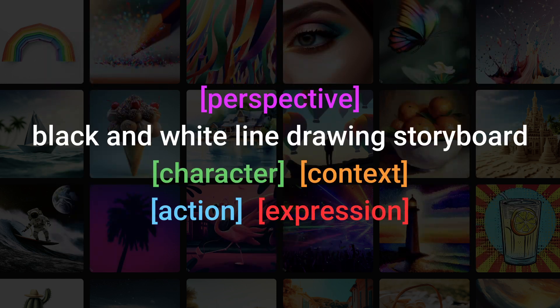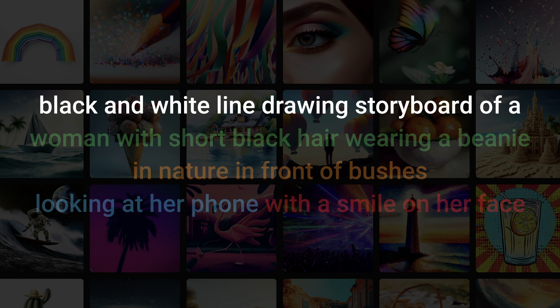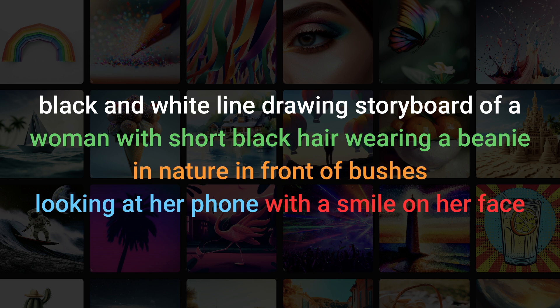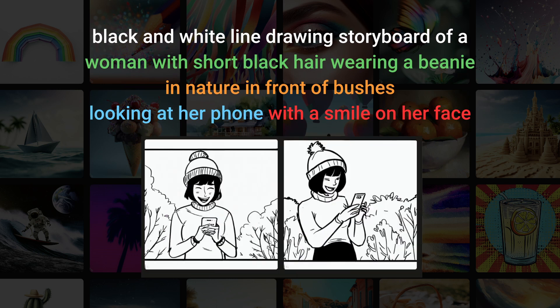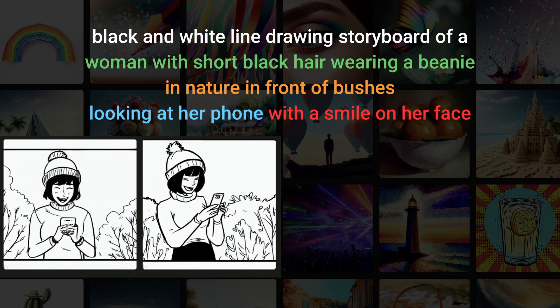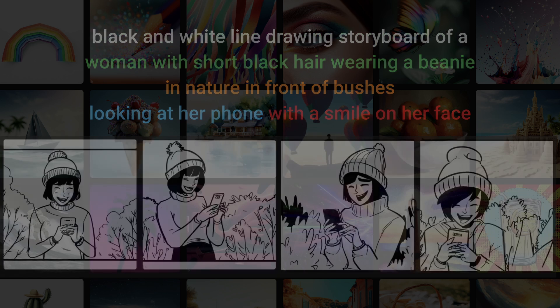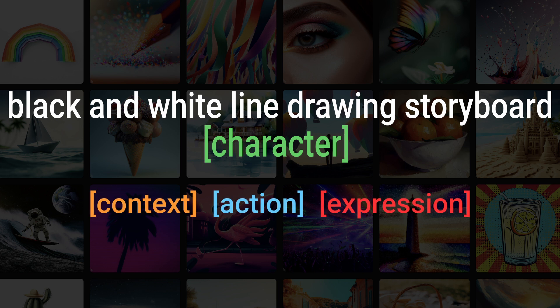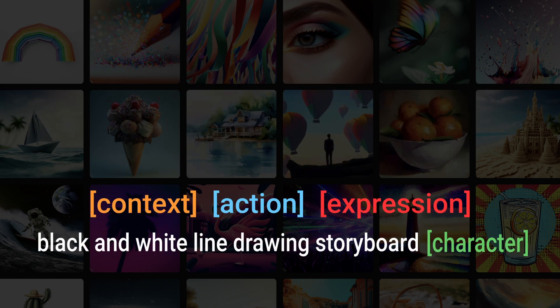Here's the template, and I'm going to share it so you can reuse it. Here's an example of a good prompt: 'Black and white line drawing storyboard of a woman with short black hair wearing a beanie in nature in front of bushes, looking at her phone with a smile on her face.' The template has two parts. The first part highlights the elements that need to remain consistent across all frames — who are the characters, what's the art style — and it always has to be at the very start, because if you put it at the end, Bing tends to disregard it.